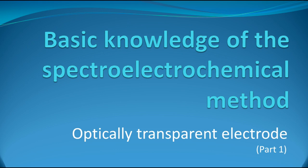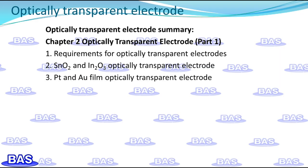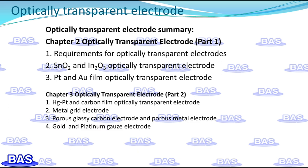This video will introduce the basic knowledge of the electrochemical method, with a focus on Optically Transparent Electrode Series Part 1. The introduction of optically transparent electrodes will be divided into two parts. In the first part, the requirements for optically transparent electrodes will be covered, followed by tin oxide, indium oxide, and platinum and gold film optically transparent electrodes.